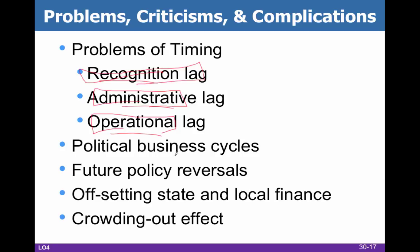Some other things make this more complicated. The political business cycle: when an election year is coming up, everybody starts spending money to get votes — that's problematic. The prospect of future policy reversals: if we do a tax cut but people think it's going to get rolled back, they won't spend the tax cut because they see it as temporary. Also, if a federal tax cut causes states to receive less federal money and state and local taxes then go up, you don't have any actual change.